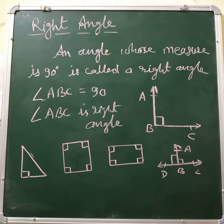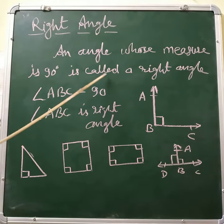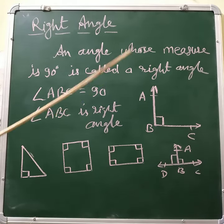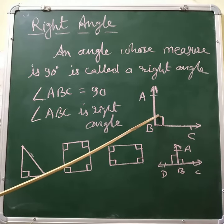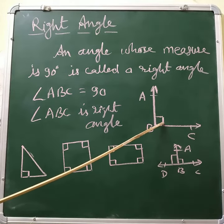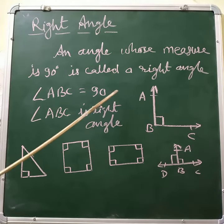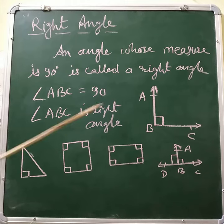Hello everyone, today we will learn about right angle. What is a right angle? An angle whose measure is 90 degrees is called a right angle. See here, angle ABC has this sign, which is the sign of 90 degrees, so angle ABC equals 90 degrees.